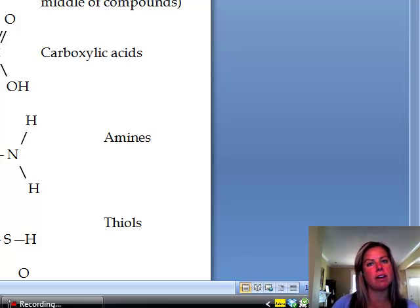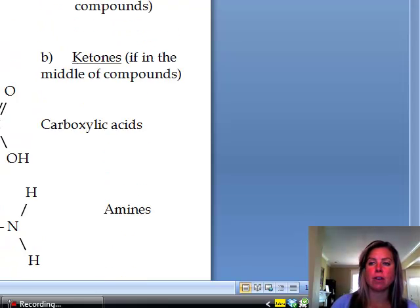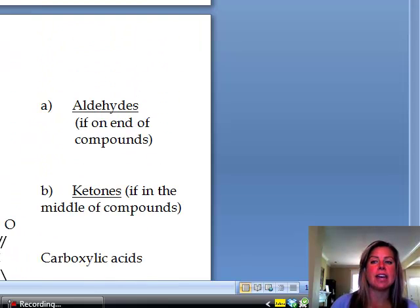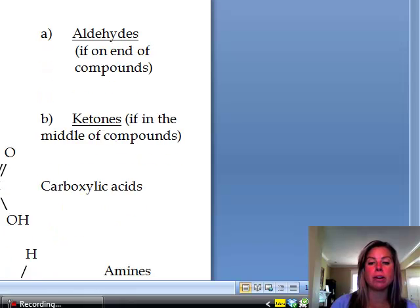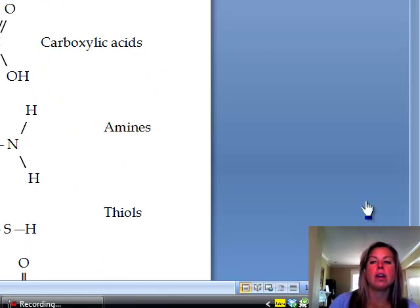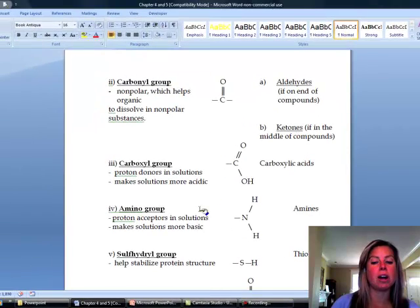these are going to be the names of the molecules when they have that functional group attached to them. So going back to that hydroxyl group, you can see anything that has a hydroxyl on it is going to be called an alcohol, okay? So here with the carbonyl group, if that C double-bonded to an O is on the end of a compound, we call it an aldehyde. And if it's in the middle of a compound, we call it a ketone. And I think I've got a picture.